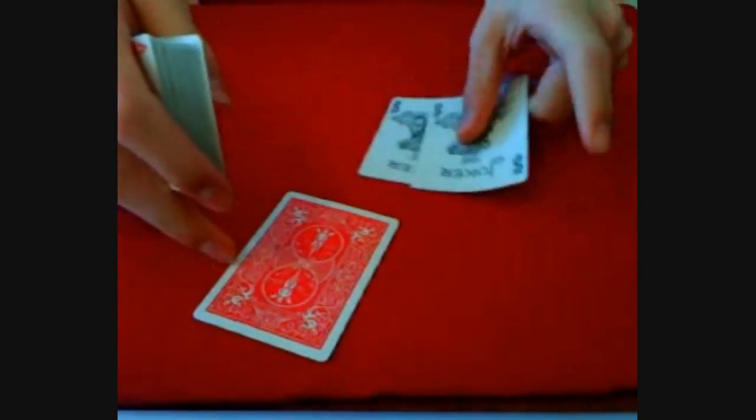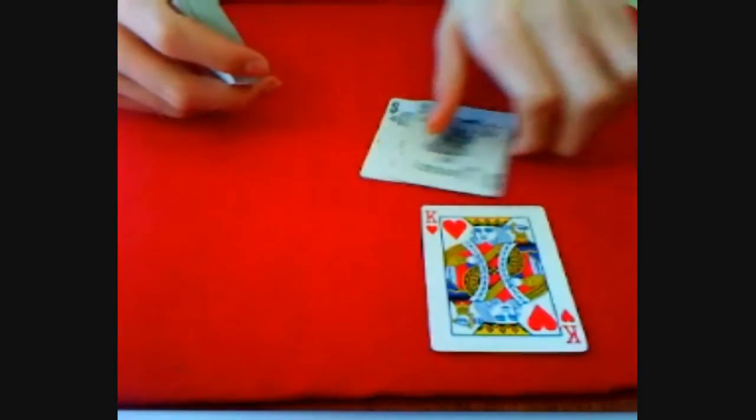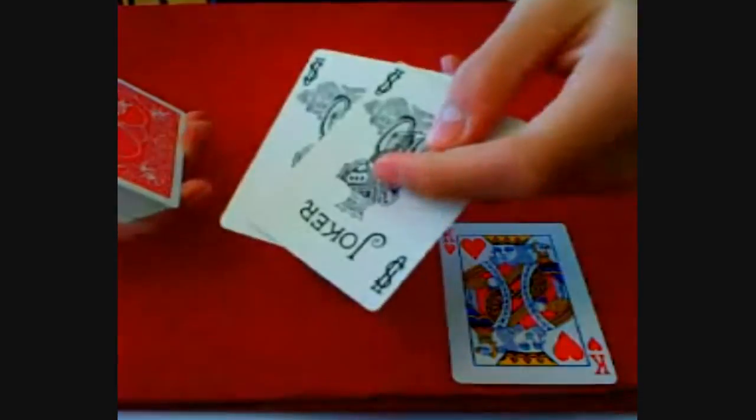Now, it makes the illusion that one card is trapped in between, and it would be the first selection. Now, because you did that setup, that card should show up. Now, if it doesn't, just look back at the setup.